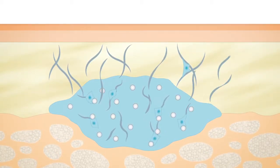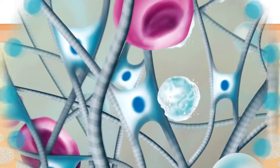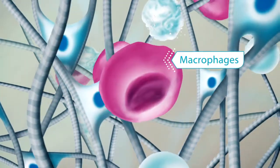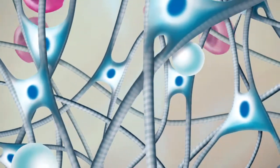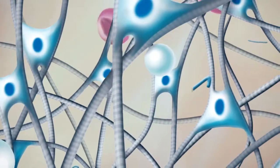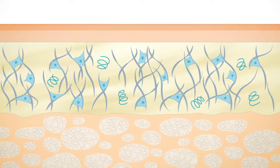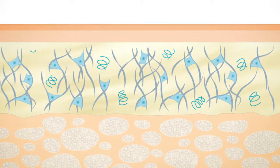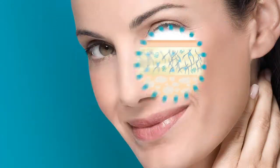In the dermis, the gel carrier begins to degrade. Simultaneously, penetrating macrophages slowly dissolve the microspheres. Radiesse regenerates the fibroblast-collagen network and additionally stimulates elastin production. In this way, the skin regains structural support and elasticity, with skin quality improving visibly.